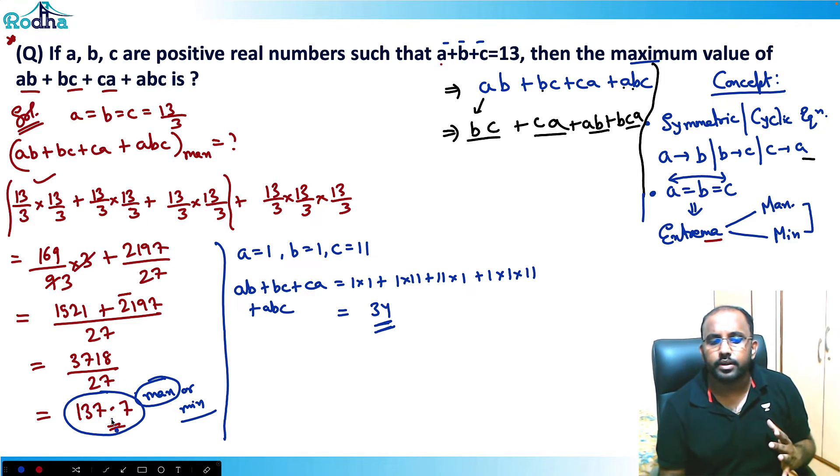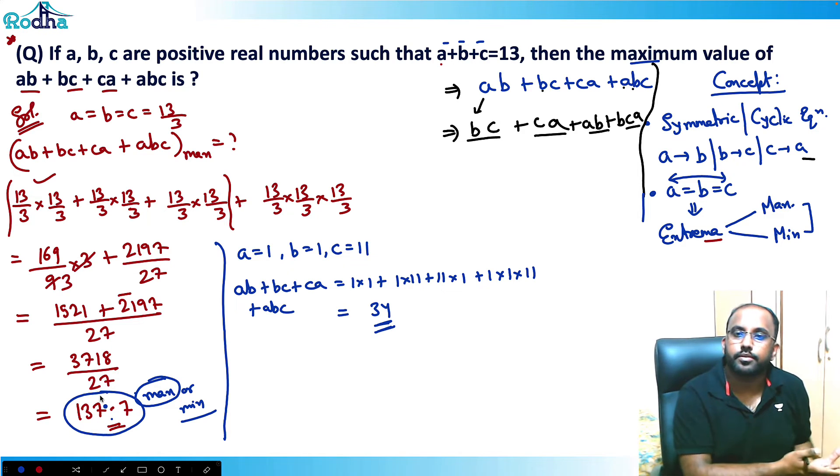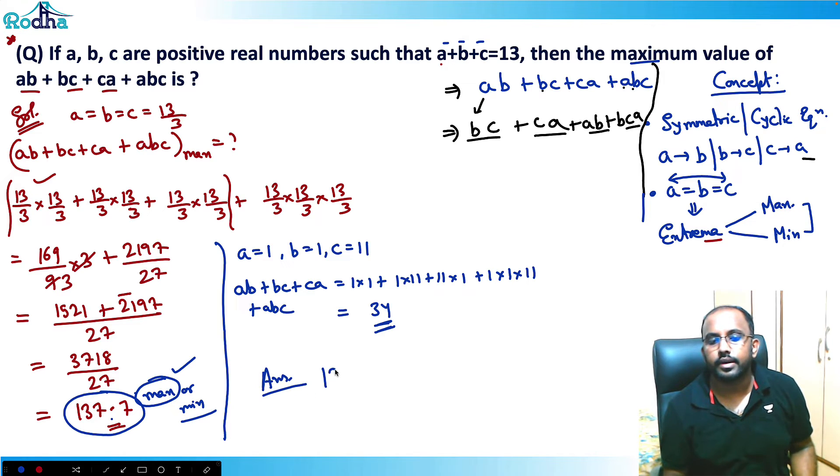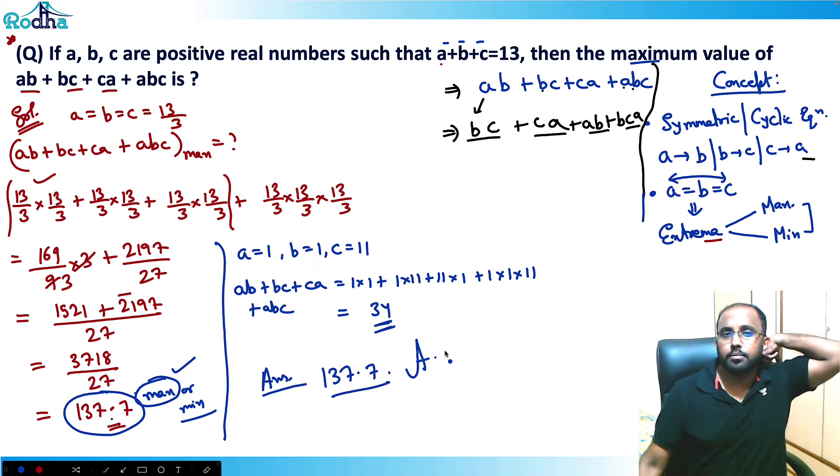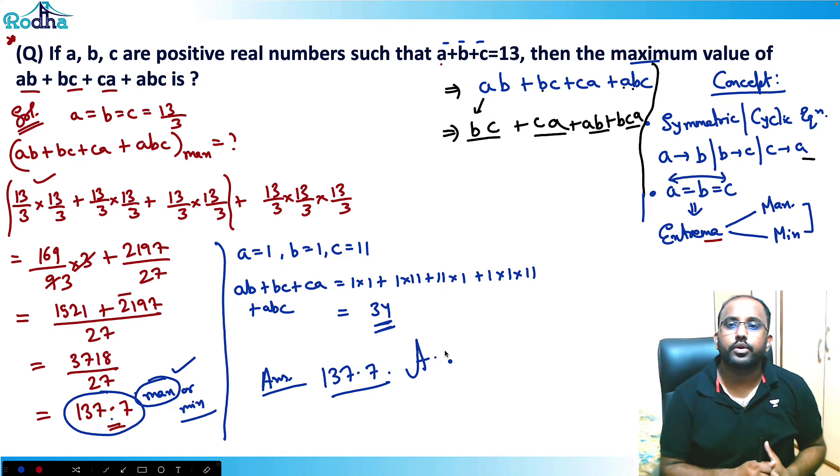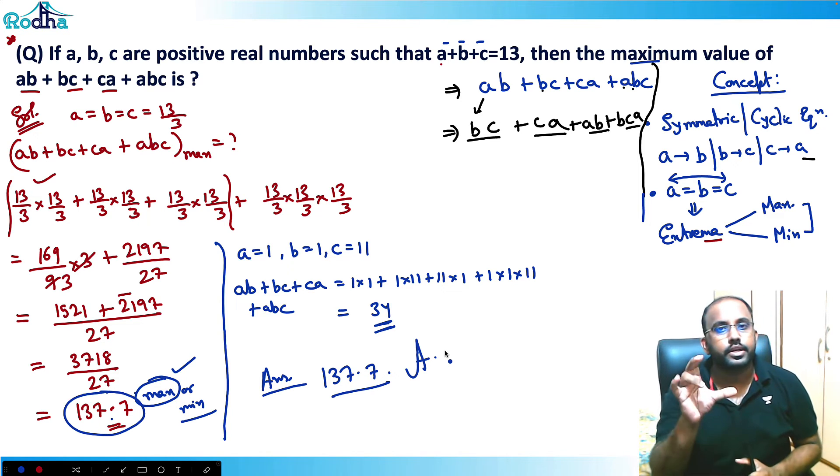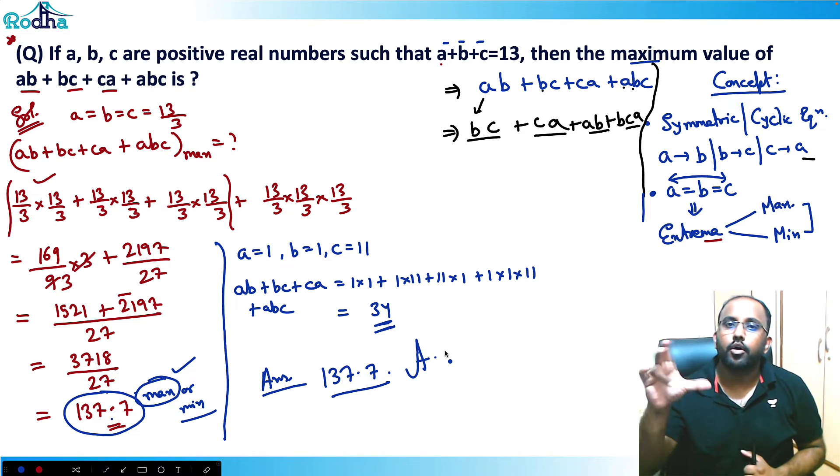Because whenever I equate variables in any cyclic equation, I'll be getting maximum or minimum value. I need to just check by putting the values a bit here and there, is it maximum or minimum? So once I checked that I got that no, at other set of values I'm getting 34 also. That means 137.7 can't be the minimum value because for some values the value will be less than 137 also. So that means for sure it is maximum. That means my answer is 137.7 around, seven or eight roughly. All of you got the funda?